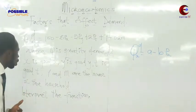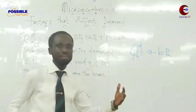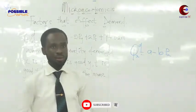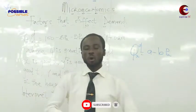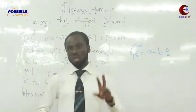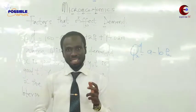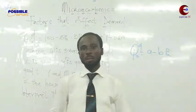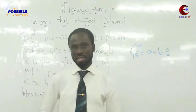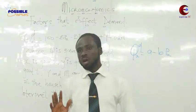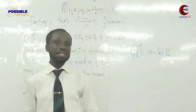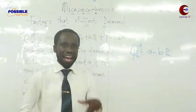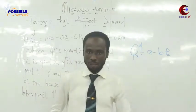Straight away from that, once you have done the factors affecting demand — taste and preference, weather and season, advertisement, and all those things — I have told you that there are two other factors that are very important: the prices of other related commodities and the income of the consumers. This semester, we are going to give reference to these two factors.